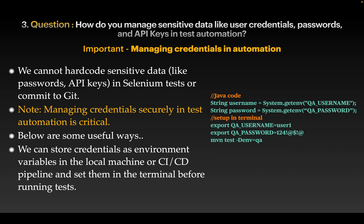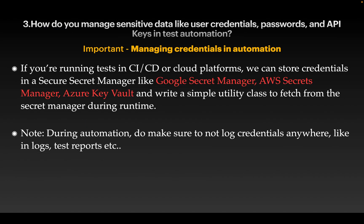If you are doing automation on your local machine, store credentials as environment variables and set them in your terminal before running tests. The sample code on the right side shows how to use terminal variables so you are not hard-coding any values in your automation framework and not committing passwords to your Git repository.